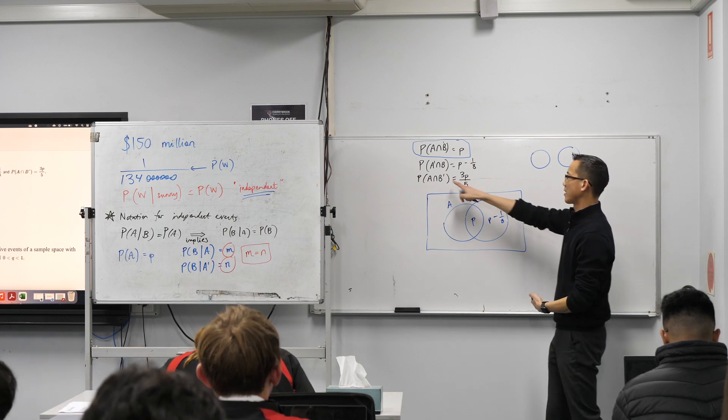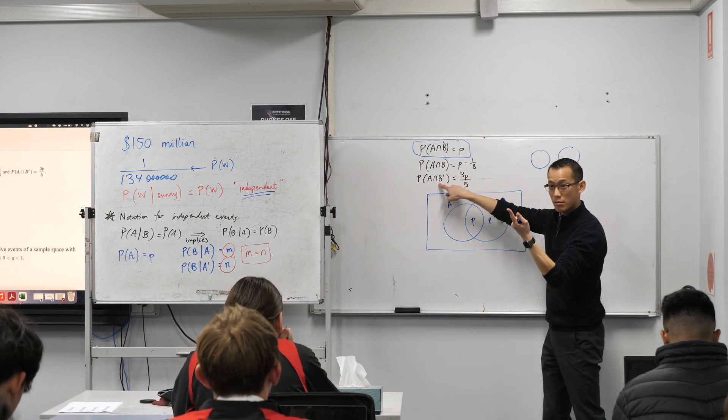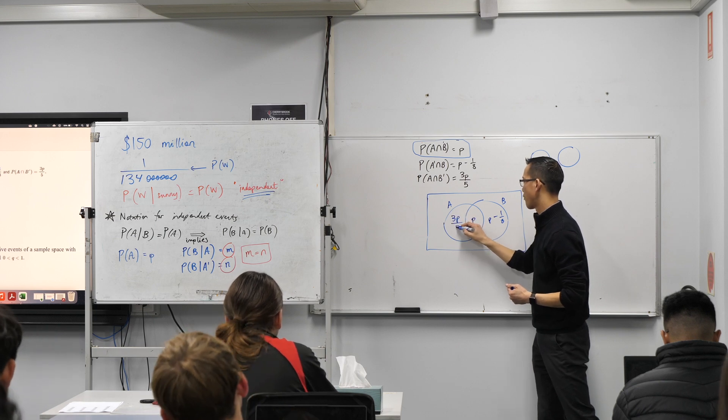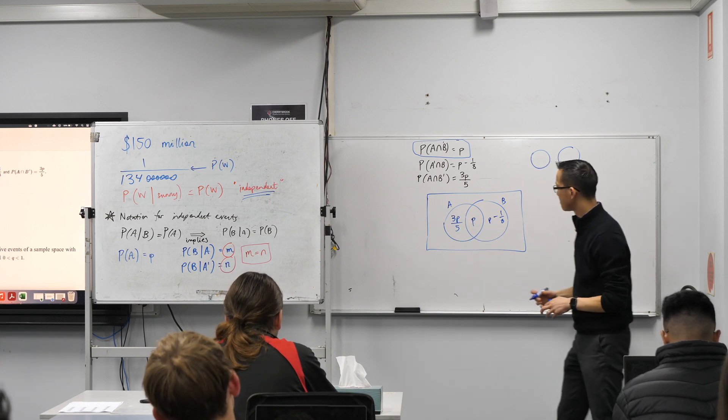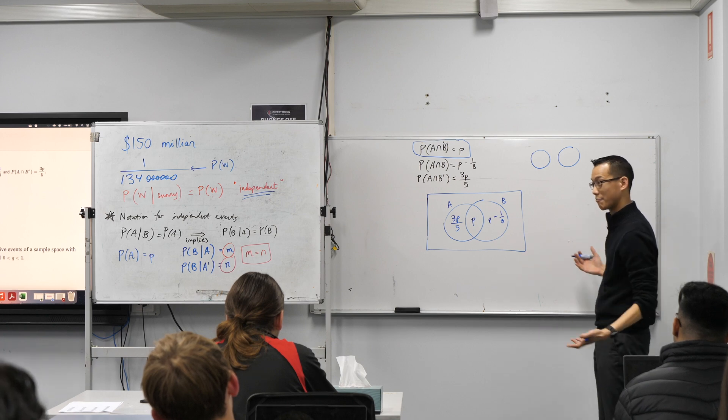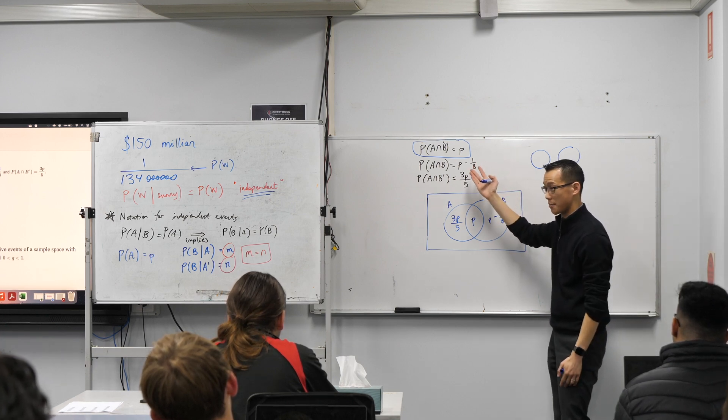And probably from there, like this logic is the reverse, right? So you can say, well, that must be three P over five, whatever on earth that is, okay? My diagram is done, at least with all the information they've provided me, okay?